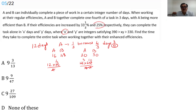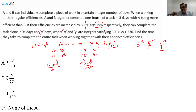B's efficiency increases by 25 percent, meaning it becomes 5/4, so the days become 4/5 of the original. This means B's days must be a multiple of 5. 48 is not a multiple of 5, so that case is eliminated.